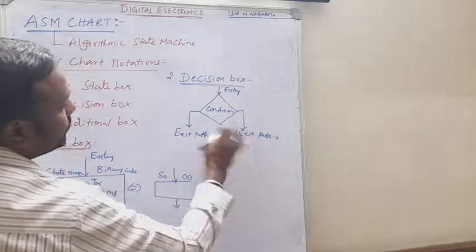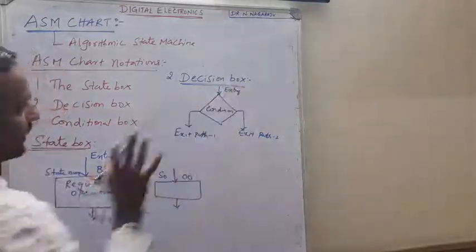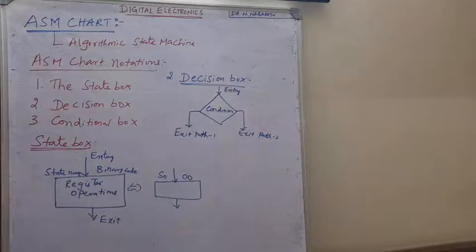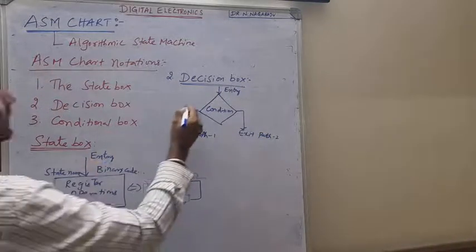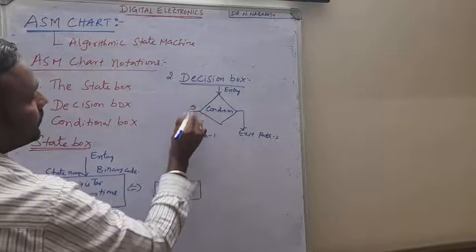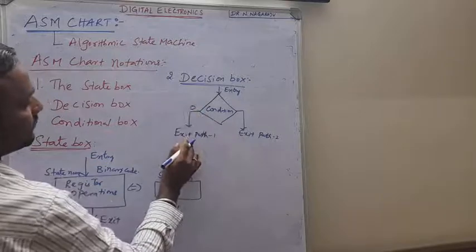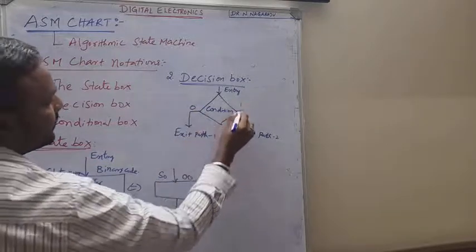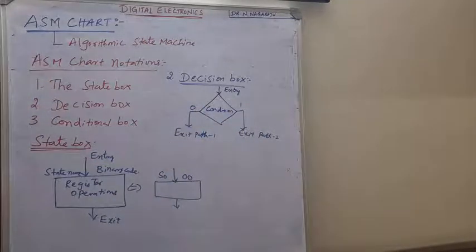So there is one entry and two exit paths. If the input is 0, that is exit path 1; if it is 1, that is exit path 2. This is the basic structure of the decision box.